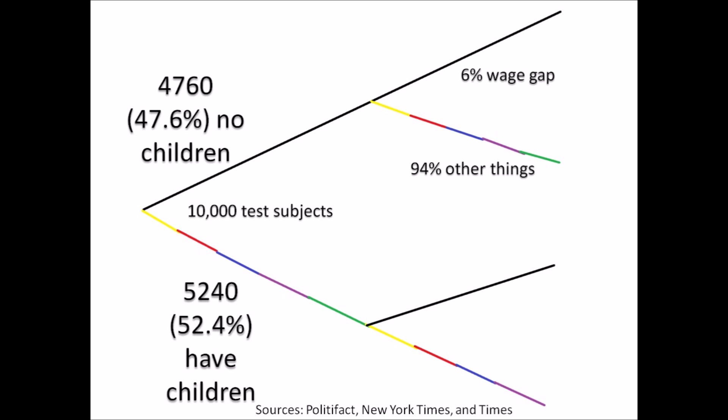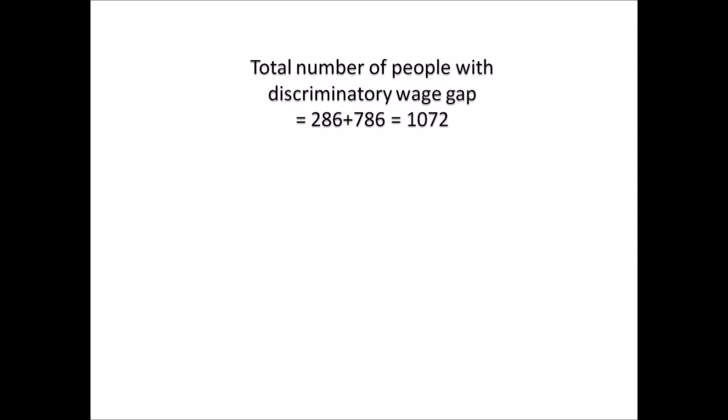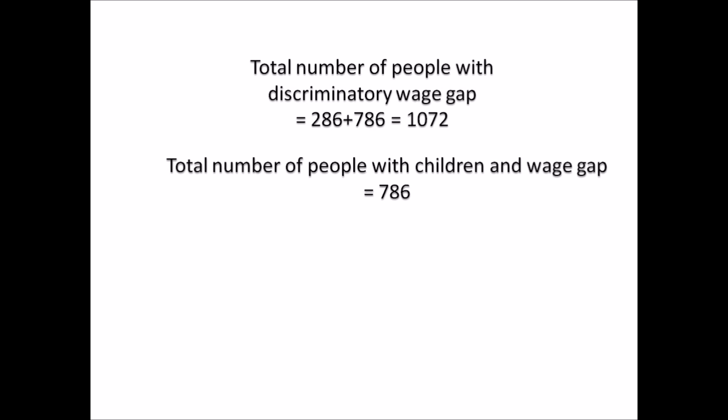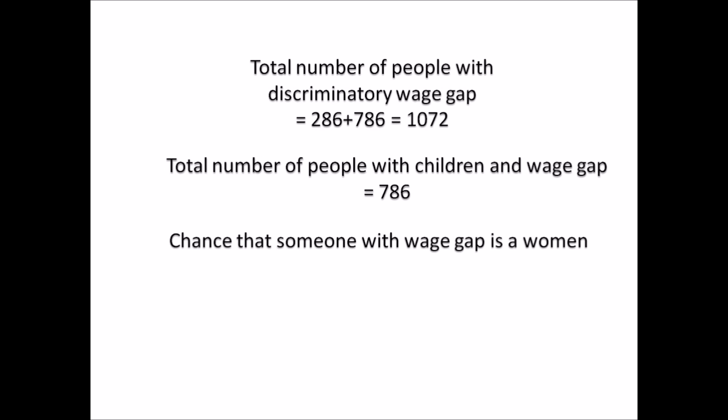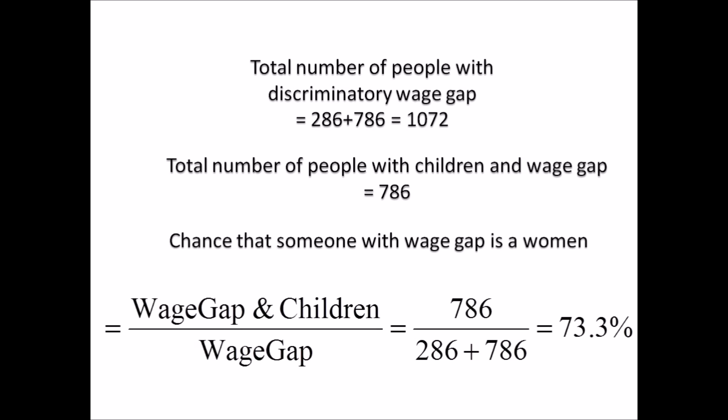For women with children, the New York Times showed that for each child, a woman takes a 4% cut in salary. It's also interesting to note that men get a 6% raise for every child they have. Americans have about 2.5 kids, so this creates a 15% wage gap for women with children — in other words, they make about 85% the amount of men working the same job. We can compute the total number of women who report significant wage discrimination to be 1,072, and the number of women with children and a significant wage gap to be 786. Using Bayes' Theorem, the probability that a woman with significant wage discrimination also has children turns out to be near 75%. This means the primary reason for the wage gap in the US is due to discrimination against women who have children.